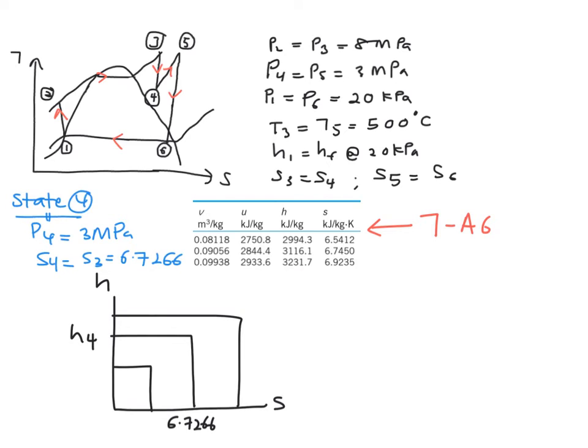So you are going to place the lower value of your S, which is 6.5412, here, and the higher value, which is 6.7540, here.